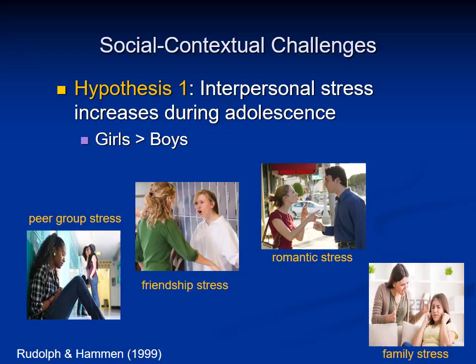We started with a very simple premise that interpersonal stress levels would increase during adolescence, particularly in girls. For the most part I'll be talking about general measures of interpersonal stress that incorporate stress in the peer group, friendships, romantic relationships, and the family, though at times throughout the talk I will distinguish among these domains.